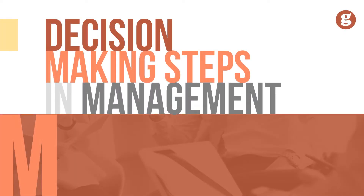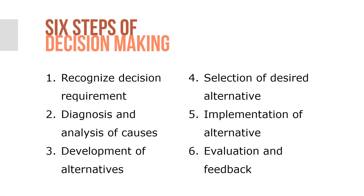Whether a decision is programmed or non-programmed, six steps are typically associated with the effective decision process. Managers confront a decision requirement in the form of either a problem or an opportunity. The six steps are: recognition of the decision requirement, diagnosis and analysis of causes, development of alternatives, selection of a desired alternative, implementation of the selected alternative, and evaluation and feedback.